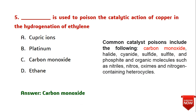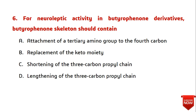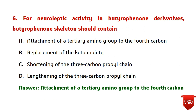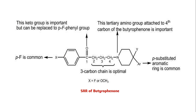Question six: for neuroleptic activity in butyrophenone derivatives, the butyrophenone skeleton should contain what? The attachment of a tertiary amino group to the fourth carbon is essential for neuroleptic activity, so the answer is option A. Other options — replacement of the keto moiety, shortening of the three-carbon propyl chain, or lengthening of the three-carbon propyl chain — do not influence neuroleptic activity. The three-carbon chain is optimal, and the tertiary amino group attached to the fourth carbon of the butyrophenone is the critical structural feature.